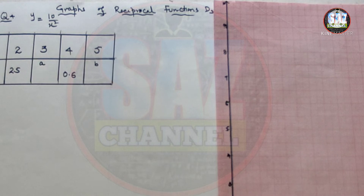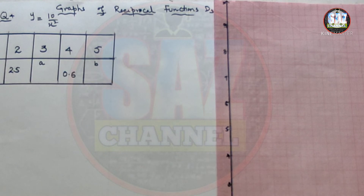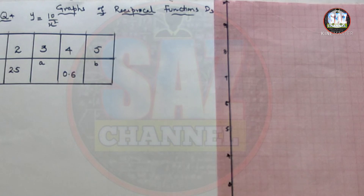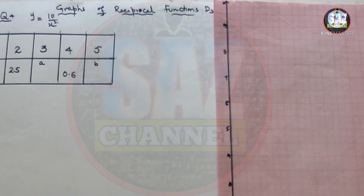Hello and welcome to Maths by SARS. This is my fourth lesson of D3, Chapter 7, Exercise 7A, which is about the graphs of functions. In this lesson we'll be learning how to draw the graph of reciprocal functions. We will discuss Question 4, where the given function is y = 10 over x².